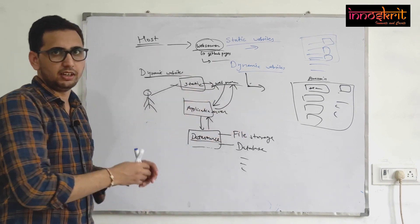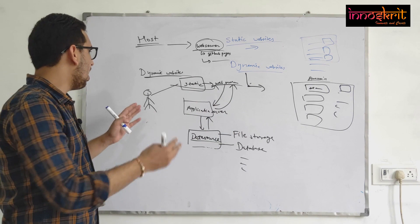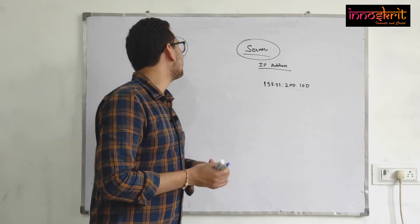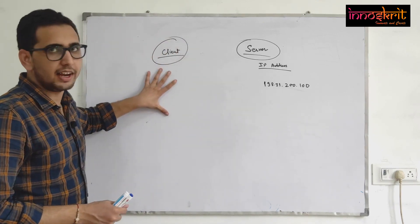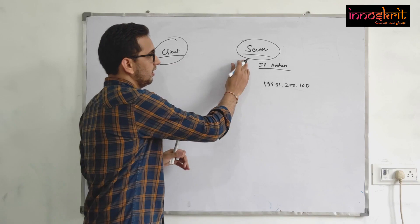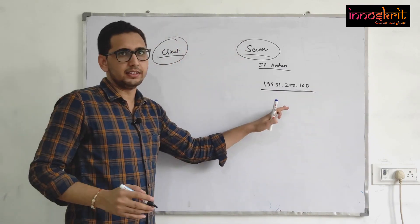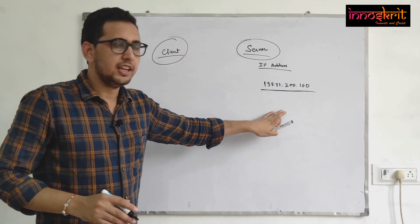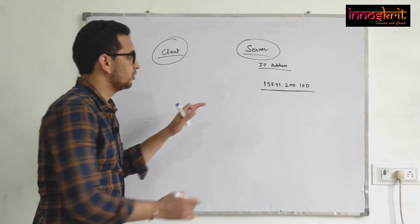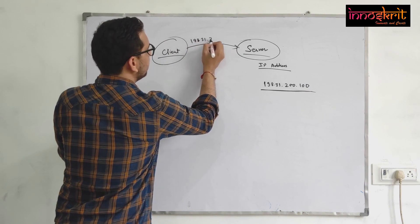Now let's talk about how exactly a client is able to reach a particular server location. Just like writing a letter requires an address, the client needs an address to reach the server. The server has an IP address associated with it — this is the web address. If the client knows this address, they can type it into the browser and talk to the server.